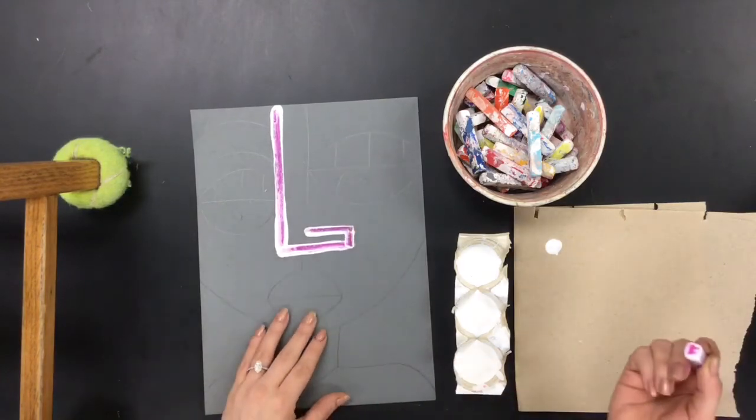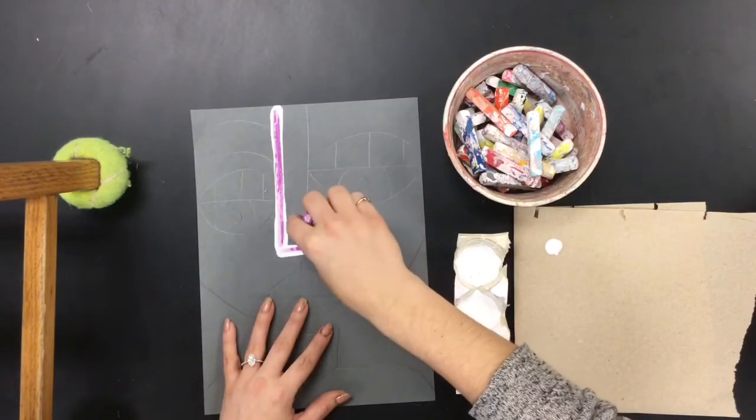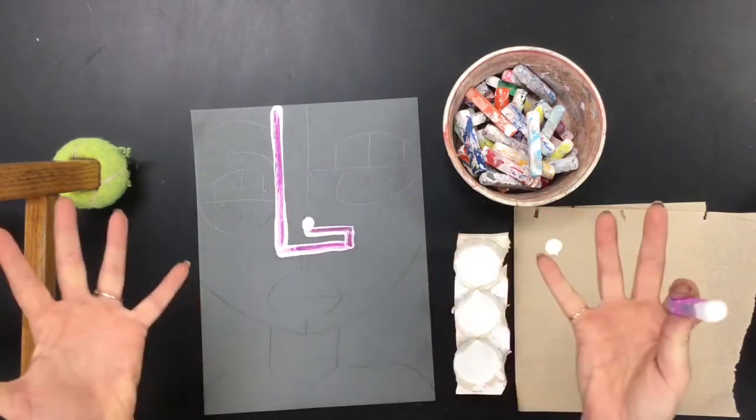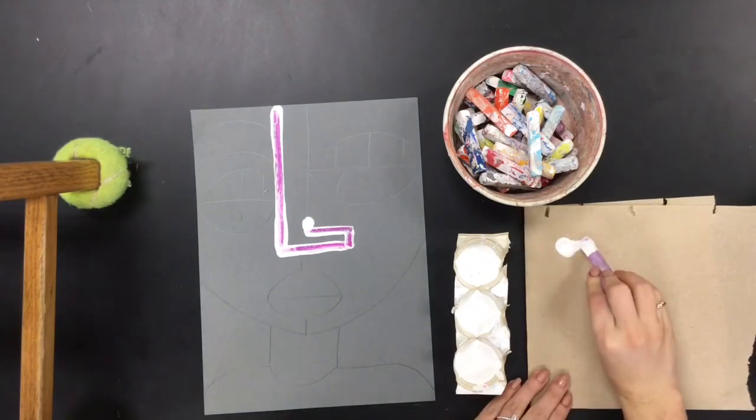One thing we do not want to happen, boys and girls, is we do not want a big blob! Oh my goodness! Now what? We don't want any big blobs of white paint on our paper.